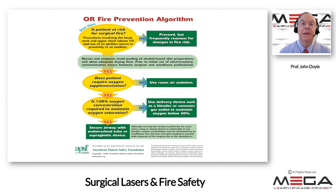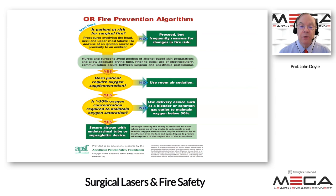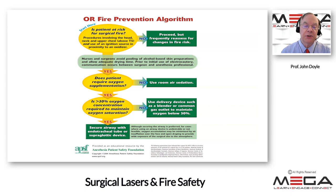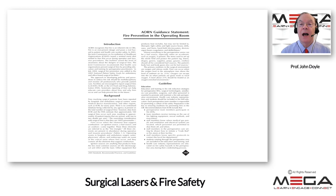The Anesthesia Patient Safety Foundation algorithm addresses patients at risk — procedures involving the head, neck, and upper chest above T5 where an ignition source is used in proximity to an oxidizer. If the patient requires supplementary oxygen over 30%, they recommend the use of an endotracheal tube or supraglottic airway device so oxygen is not concentrated near the surgical site. The Association of OR Nurses published a guidance statement called 'Fire Prevention in the Operating Room' in 2005, available in their standards, recommended practices, and guidelines.